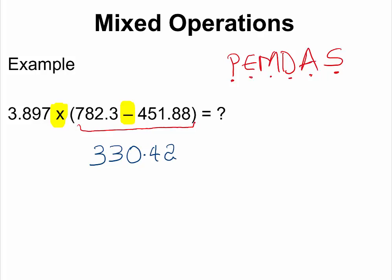This is a subtraction operation, so the final answer is limited by the measurement with the least decimal places. This measurement has one decimal place, and this measurement has two decimal places. Normally we would round to one decimal place after this operation, but remember we are not going to round. We just want to know where the last digit for rounding is, and then we proceed with our calculations.